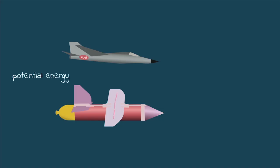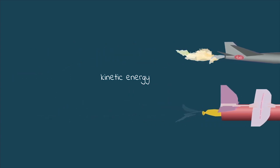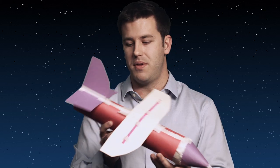Potential energy is stored energy, like gas in a jet plane or air in a balloon. Kinetic energy is energy in motion, like when that jet flies through the sky or your glider plane takes off across the room.